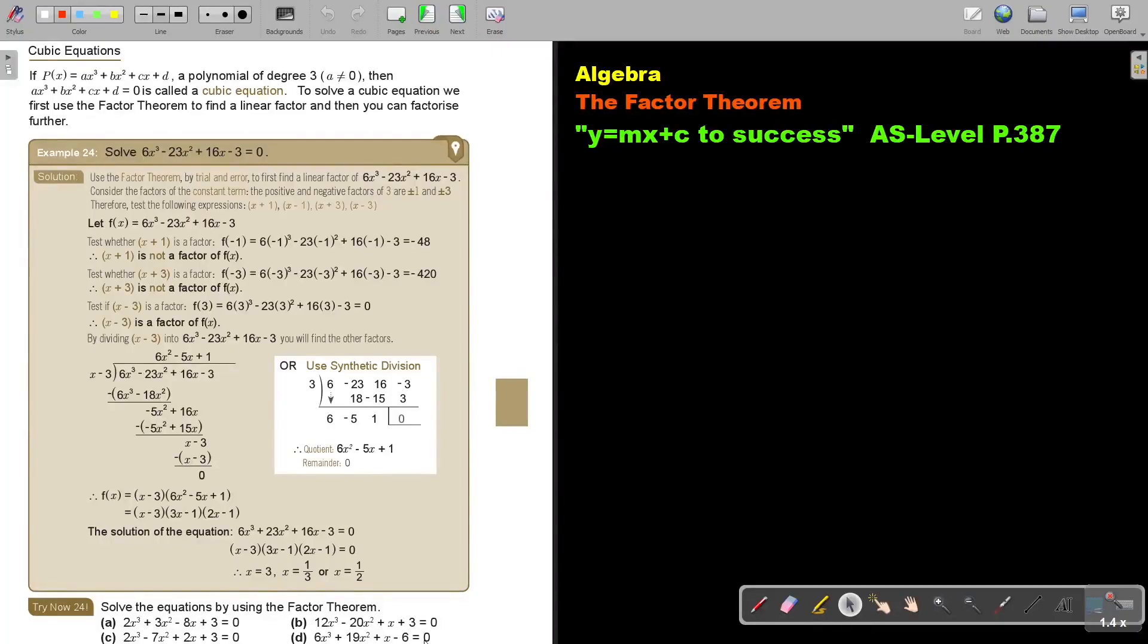In this video, we will continue with the factor theorem. You will find this on page 387 in the Namibia AS level mathematics textbook y equals mx plus c to success. Cubic equations. If p(x) is a polynomial of degree 3, so it's ax³ + bx² + cx + d, a cannot be 0. Then this is called a cubic equation.